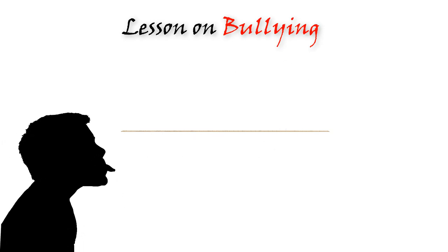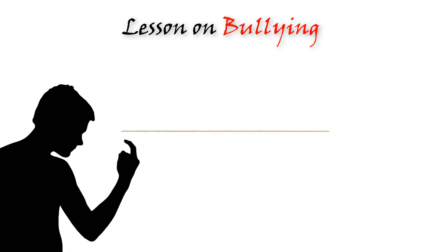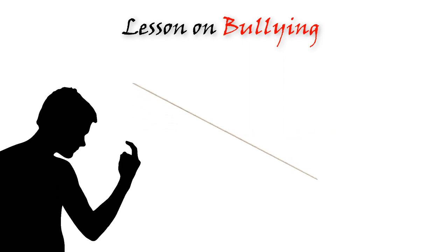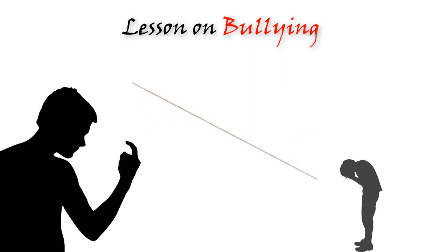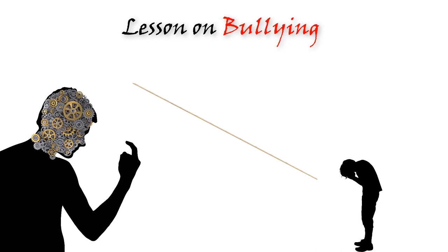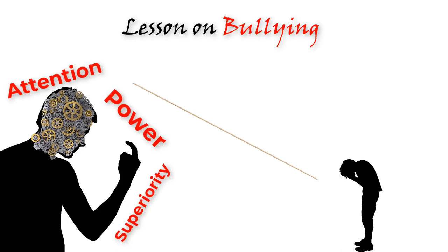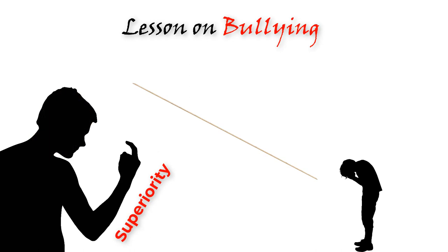However, when a person starts to pick on or bully someone else, the teeter-totter gets out of balance. The person who is picked on usually starts to feel lower than the other person — this is a normal reaction. However, if you reflect on the motivation of the bully, it is the bully who initially feels sour because of a desire for attention, for power, to feel superior, or wants to be above the other person.